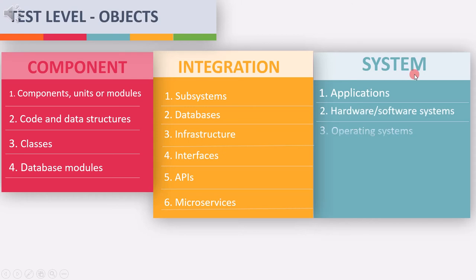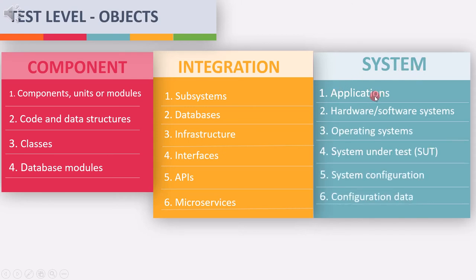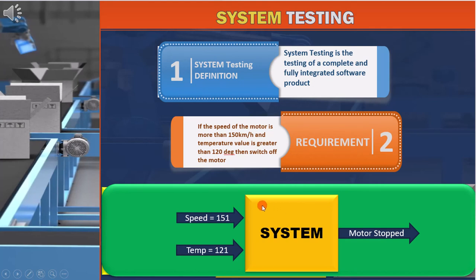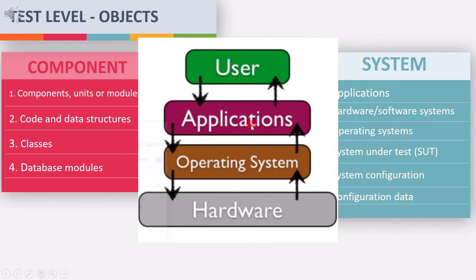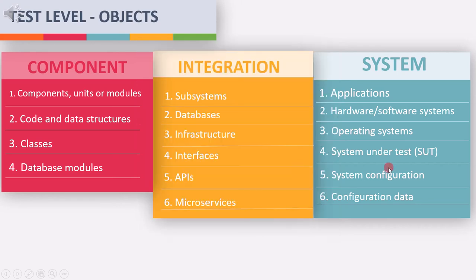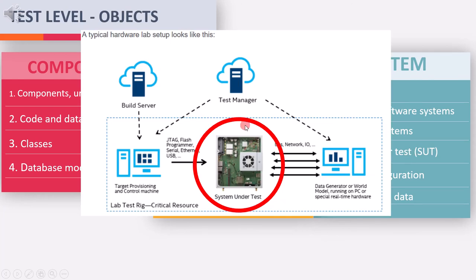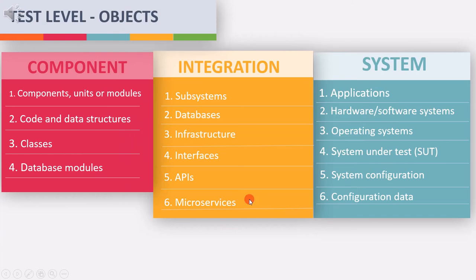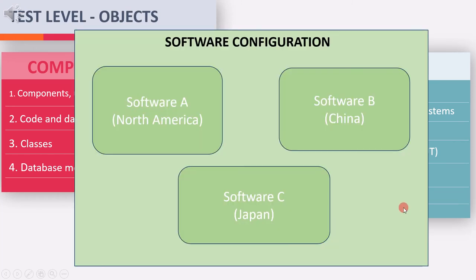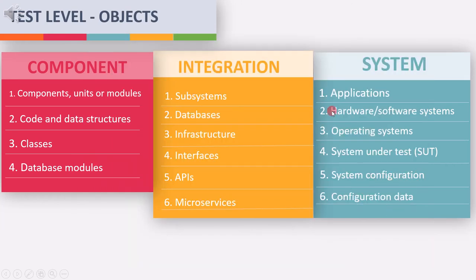Now let's move to the test objects of system level. The first test object is applications — an application can be a hardware or software system, and during system testing we get the complete application. Next is operating system; to run any software application, we need an operating system, which acts as a base. Next is system under test — the system we want to test is obviously a test object. Last is system configuration and configuration data, which are used to enable different features for different variants, allowing us to test different variants of the software.